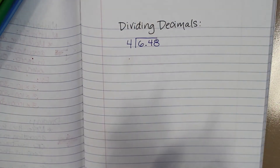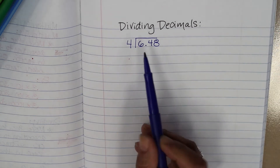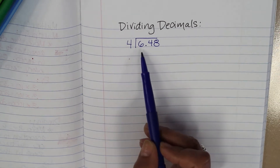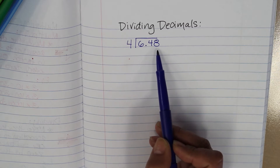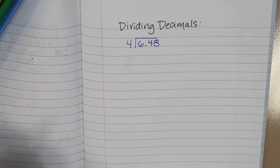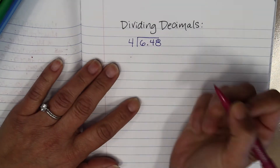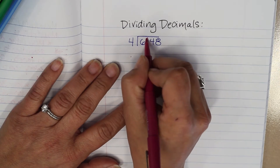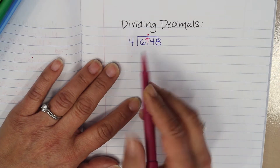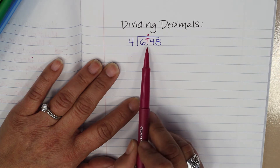Today we're going to be learning how to divide decimals — dividing problems with decimals in the dividend. My example today is going to be 6 and 48 hundredths divided by 4. The first thing I want to do is take this decimal point right here, before I even start dividing, and raise it to the roof — put it right here, directly above where the decimal is.